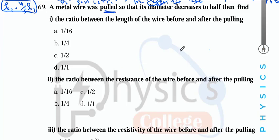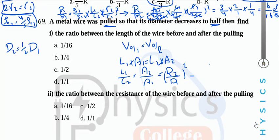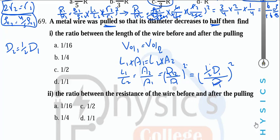A metal wire is pulled so its diameter decreases to half (d2 = ½d1). Volume is constant (V1 = V2), so L1·A1 = L2·A2, giving L1/L2 = A2/A1 = (d2/d1)² = (½)² = ¼. Therefore L2 = 4L1, and the length ratio before to after is 1:4.